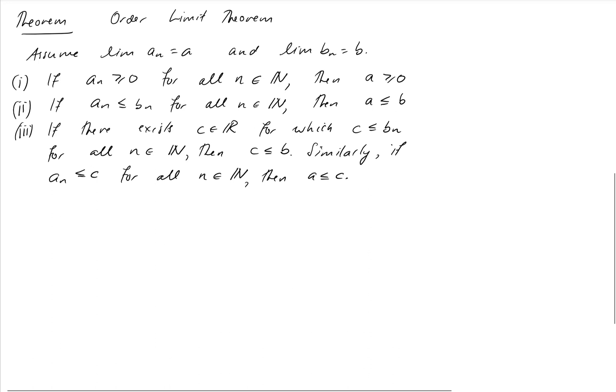And finally for the third one, it says if we have a real number c for which c is less than or equal to b_n, very similar to the first one, my limit must also be greater than or equal to c. It's like replacing zero with c and we've got the same thing. And then we have a corresponding statement for less than or equal to's.